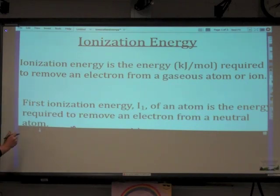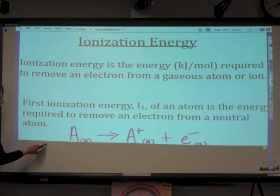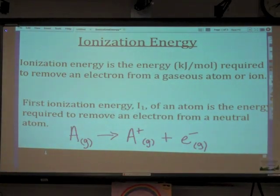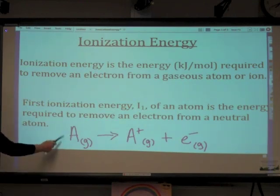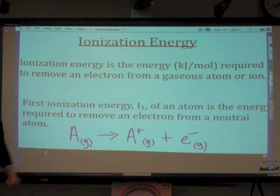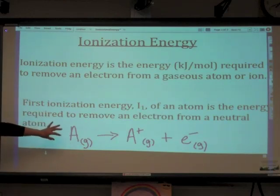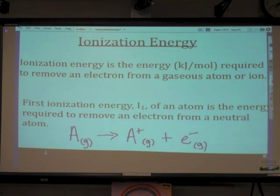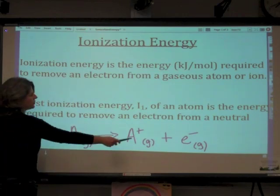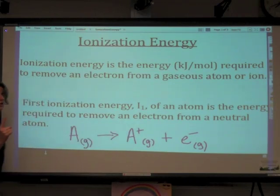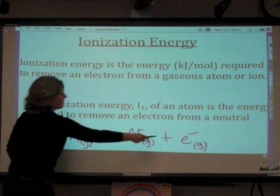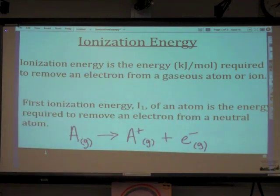We can write a general ionization equation for this. This represents an element — not a specific element, but a variable — in its gaseous state, and we're going to remove an electron from it, ionize it, to give us a positively charged cation with a +1 charge, because we're only removing one electron, plus the electron that's now free to roam.